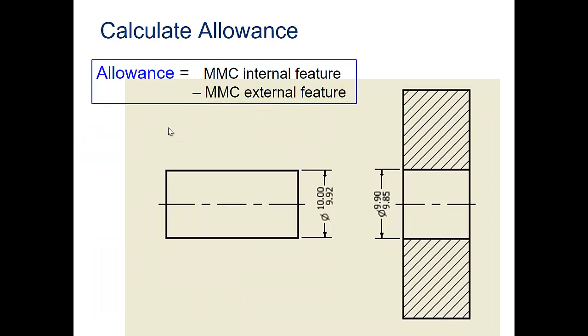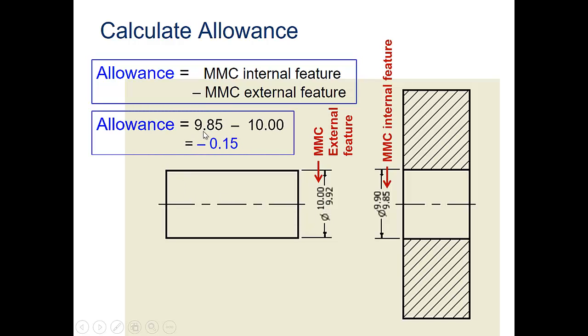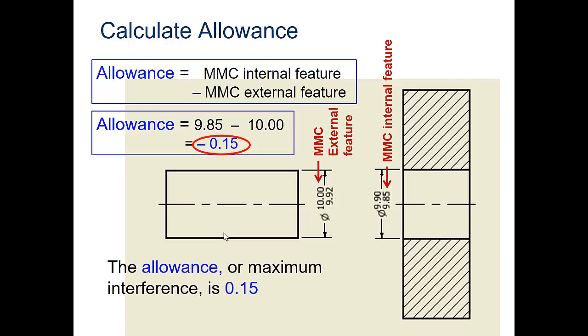For the interference fit, MMC internal feature minus MMC external feature. There's the minimum MMC internal feature, the 9.85, and then the MMC external feature will be 10.00. We still subtract those two, so by doing that in order, 9.85 minus 10.00, you do get negative 0.15 as our allowance. This allowance for maximum interference is 0.15, and you're allowed to have a negative allowance, which means there is interference there.